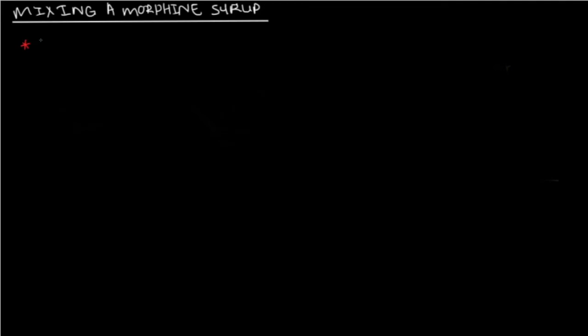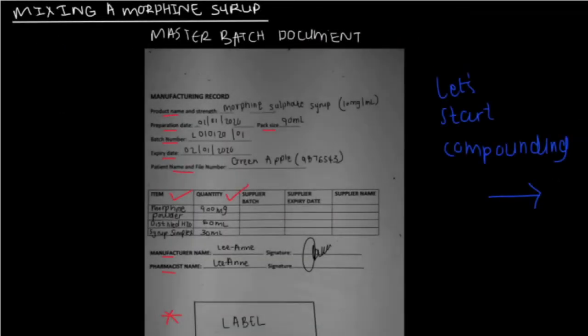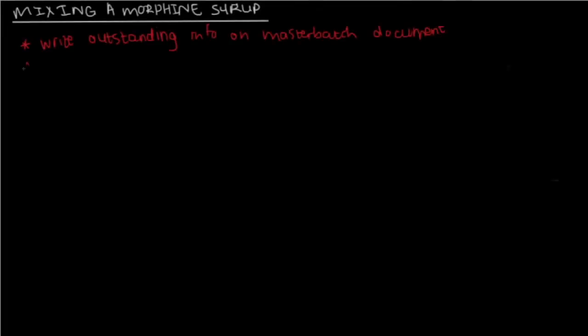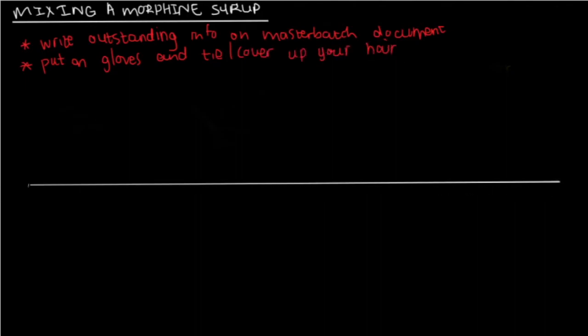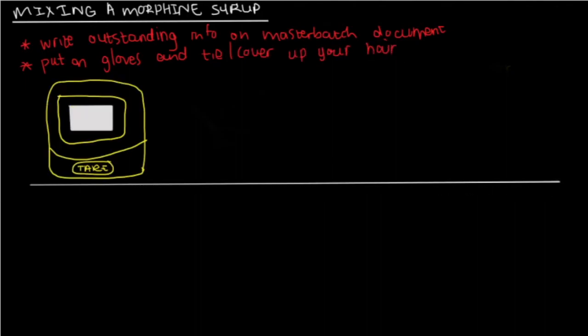All right. So, step five is going to be write all the outstanding information on the master batch document. In this case, you're going to need your batch number, supplier expiry date, and the name of the supplier. So, you can put that document aside to prevent it from getting dirty or wet. Then, you put on your gloves, and you tie back your hair, and you cover your hair, if it's applicable. And then, you can put that small paper on the scale, and press star or zero. Now, you're going to weigh the powder on the small paper. In this case, it's going to be 0.9 gram.